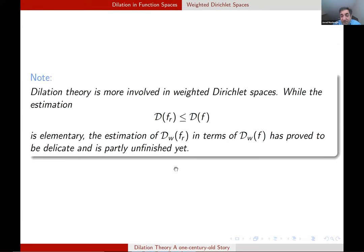For these spaces, even though the relation between D of F_R and D_F is simple in the classical space, in the weighted Dirichlet space, this relation wasn't that easy and took almost 30 years to obtain a result, which in one sense is complete, but in another sense is not. We will see why.